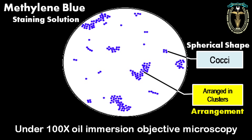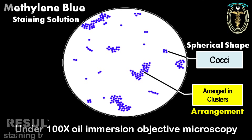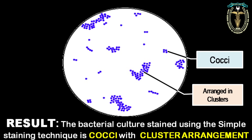By simple staining method we can only determine the bacterial shape, their arrangement, and size. So the result is written as: the bacterial culture stained using the simple staining technique shows cocci with cluster arrangement.